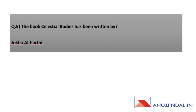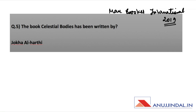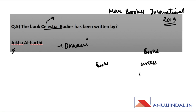The book Celestial Bodies — the question was indirectly related to the Man Booker International Prize. The Man Booker International Prize 2019 was awarded to the first Omani writer, Jokha Alharthi, for her book Celestial Bodies. The question asked was: the book Celestial Bodies has been written by whom? Keep in mind that when awards are given for books, you should know the book name, the writer, and the award.